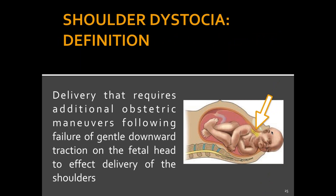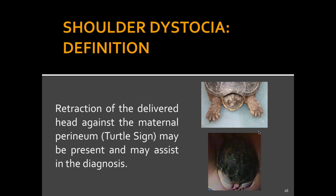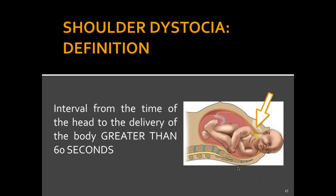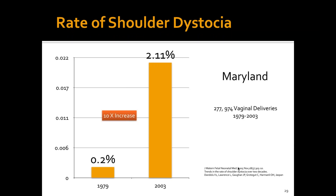Delivery requires additional obstetric maneuvers following failure of gentle downward traction of the fetal head to effect delivery of the shoulders. The obstetrician applies a little downward traction to allow the shoulder to negotiate below the pubic symphysis. A clue that the obstetrician is getting into trouble is called the turtle sign — a very large fetal head with large cheeks that gets stuck. If the interval between head delivery and body delivery is more than 60 seconds, that indicates shoulder dystocia may be occurring.